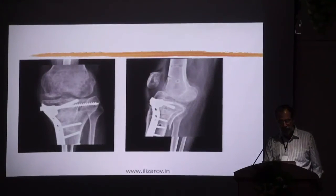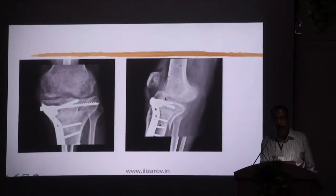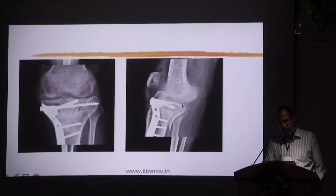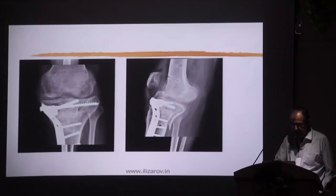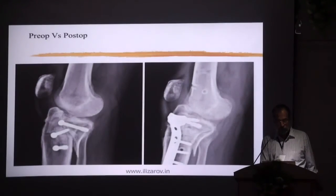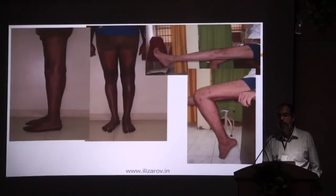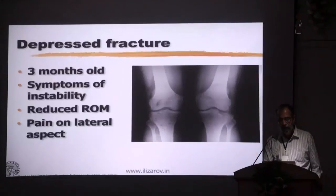Working under the fluoroscope in different directions, you are able to free up the fragment and fix it. This is the fixation on the AP as well as the lateral. There is a big bump here which is non-articular. The articular portion is well restored. This is the pre-operative and this is the post-op. This bump is not abutting and allows full extension, so there is no real reason to take it out, but if needed it can be removed.